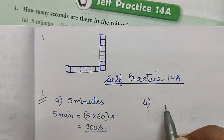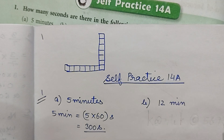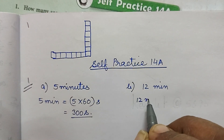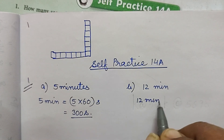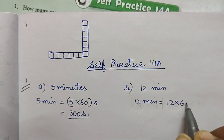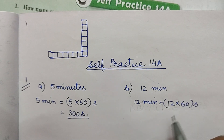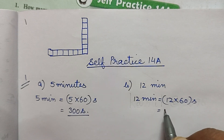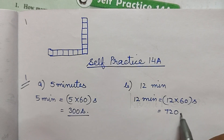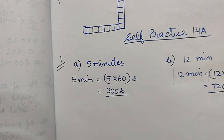Part b: 12 minutes. So 12 minutes is equal to 12 into 60 seconds. 12 times 6 is 72, so that gives us 720 seconds.